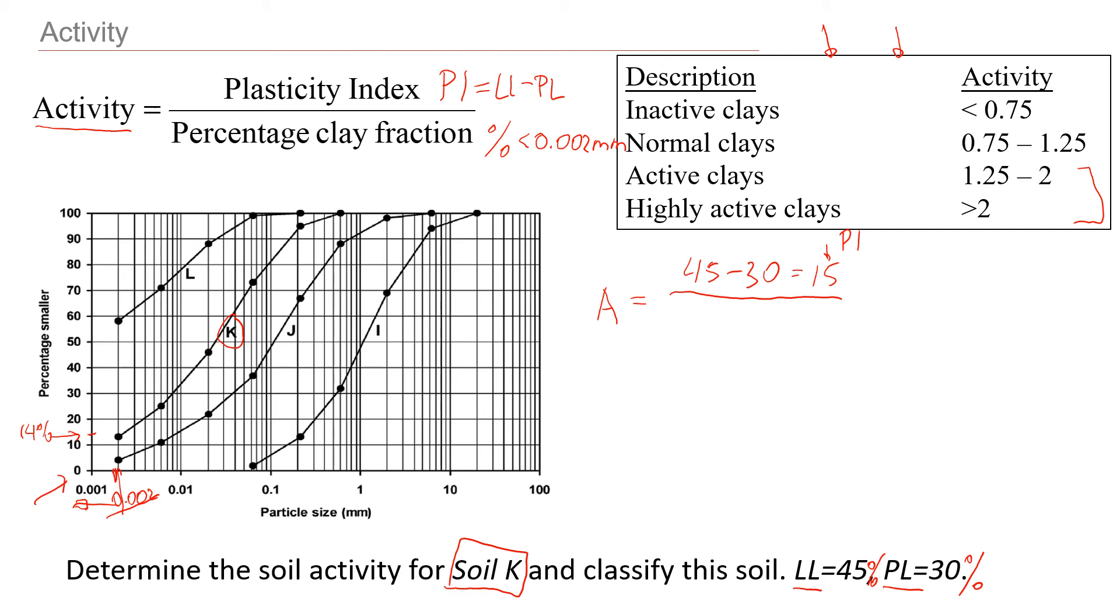I'm going to write it here that that will be 14. We get 15 over 14. And that will give us approximately 1.07.